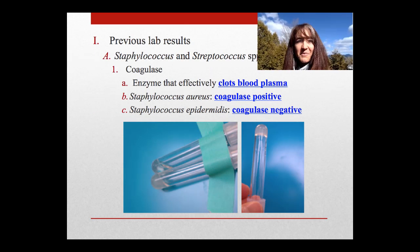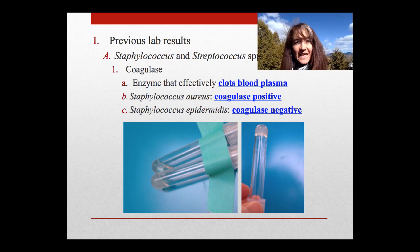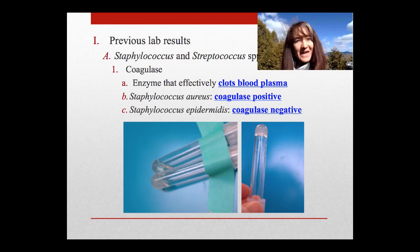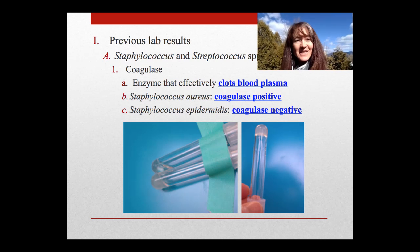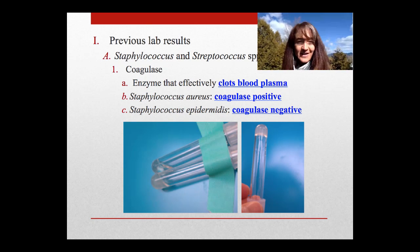So let's begin our conversation today looking at the diagnostic tests we've been learning for how to differentiate the staphs from the streps. Remember that this differentiation is absolutely key because if you do take a throat swab and put it onto a plate and you see beta hemolysis, how do you know whether you have Staphylococcus aureus or Streptococcus pyogenes?